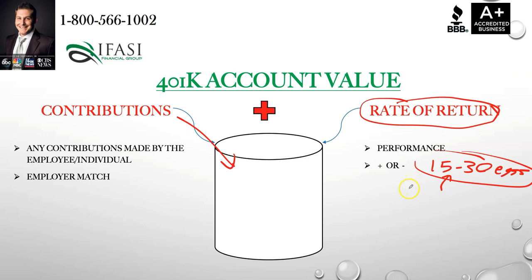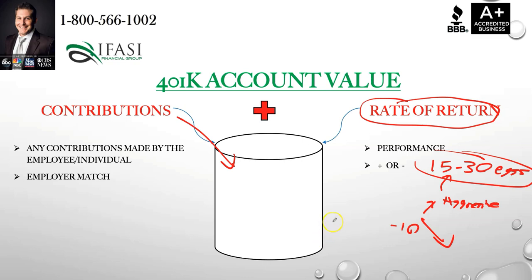If someone is a very aggressive investor and leverages an aggressive portfolio available within their 401k and the market goes down, the account balance is going to go down because performance can be positive or negative. If it dropped 10%, that's equivalent to someone taking a sword and slicing out 10% of the bucket in just that one year.